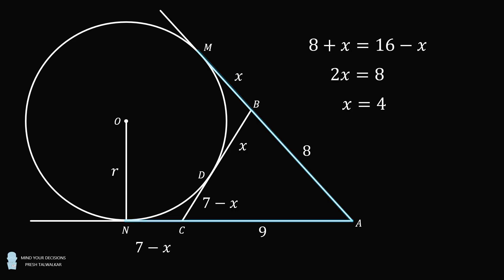Substitute in X is equal to 4. This means BD and BM are equal to 4. Then, DC and CN are equal to 7 minus X, which means each of them is equal to 3. Next, construct some line segments. Construct the radii OM and OD. Each of these has length equal to R. Each of these radii is also perpendicular to the line that's tangent to them.